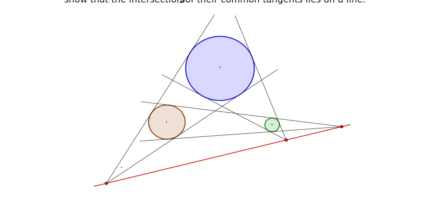So here I have these two lines, our common tangents to the blue and red circles, so they intersect here. The common tangents here and here intersect here, the common tangents here and here intersect at this point, and we see that this red line contains all three points.